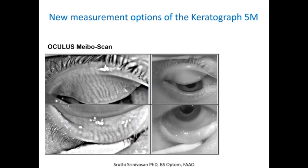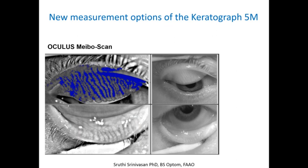Moving to meibography in particular: when we invert the upper and lower lids — as simple as using a Q-tip to hold them in place — and capture an image using the K5M, you see an infrared image as well as a binarized version of the image where you can see the glands even more clearly, as a magnified view. You also notice the acini structures quite well. It helps you to categorize or grade the meibomian gland dropout. You can see nice parallel structures showing no gland dropout in the lower and upper lid.